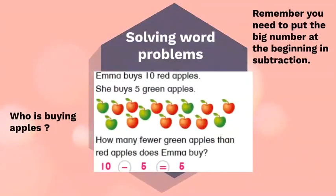Solving word problems. This is another word problem. Emma buys ten red apples, she buys five green apples. So she buys red apples and she buys green apples - she buys both apples but different color and taste.